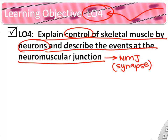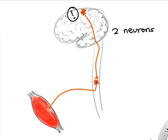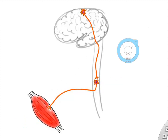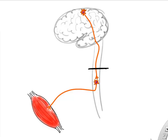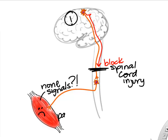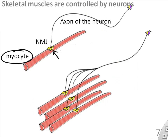It only takes two neurons to carry a signal from your brain down to your spinal cord, release a chemical, stimulate another neuron going out to your skeletal muscle, which releases acetylcholine and causes your muscle to contract. Only two neurons to control muscles in your face, arms, or legs — and the process is very fast. If you ever have a spinal cord or nerve injury that blocks the nerves controlling your muscles, those muscles will not receive a signal, will not contract, and will be paralyzed.